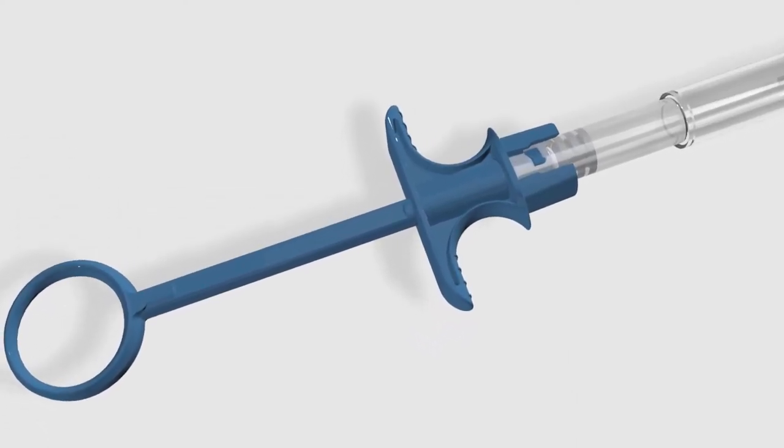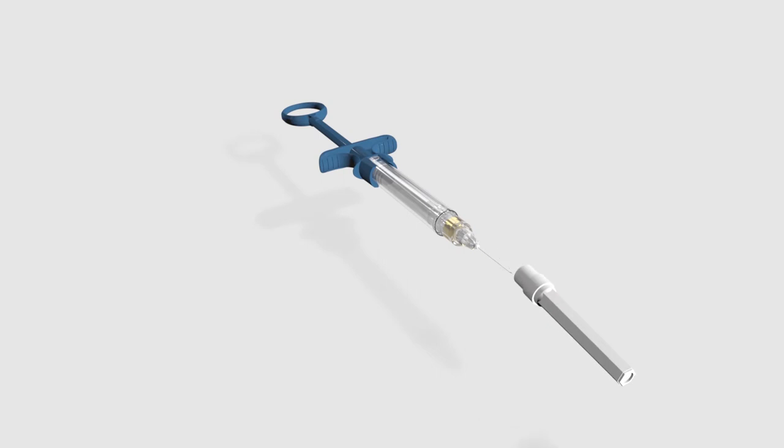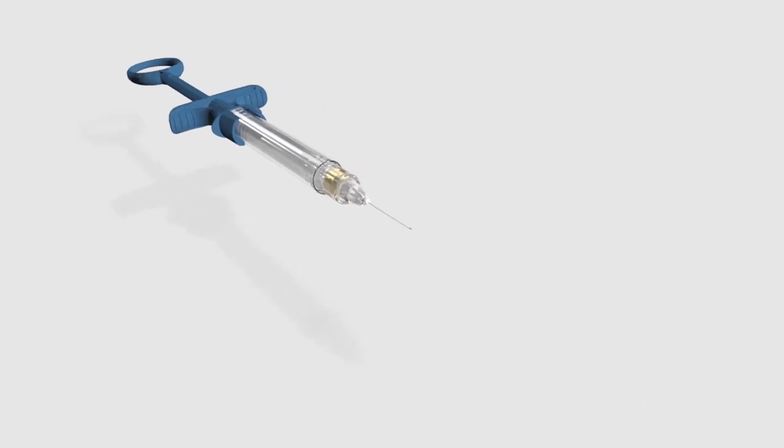Step 4: Slide the protective sheath backwards towards the handle until it locks against the handle. Step 5: Remove the needle cap and discard it.